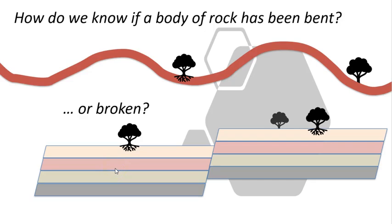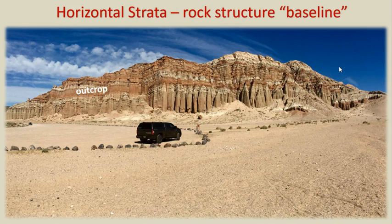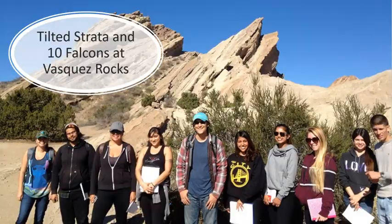How do we know if a body of rock has been bent or broken? We use a body of undeformed sedimentary rock as a baseline. The chances are that outcrops will be sedimentary rock because sedimentary rock makes up approximately 75% of all rock exposed on Earth's surface. Sedimentary rock originates in horizontal layers known as strata, so we can use horizontal strata as our reference. Where we observe that sedimentary rock is no longer horizontal, we know that the crust has been subjected to deformation.